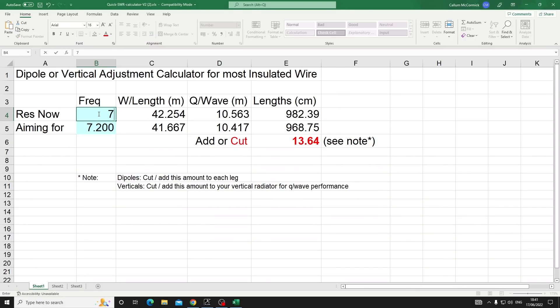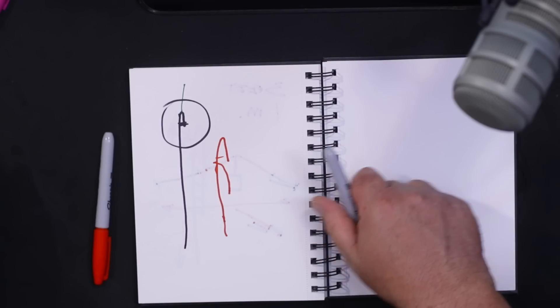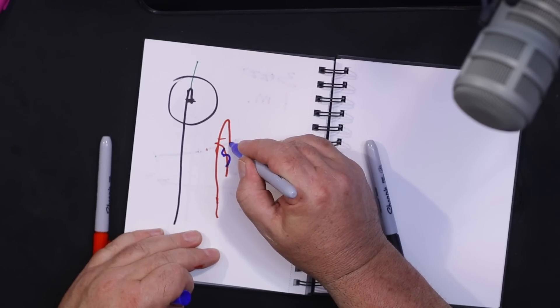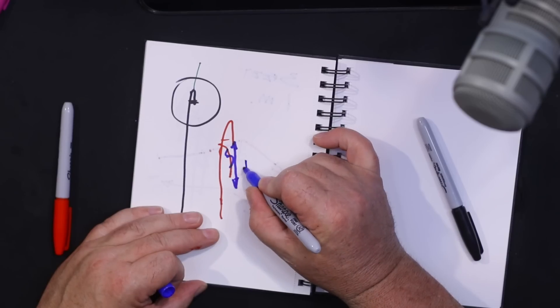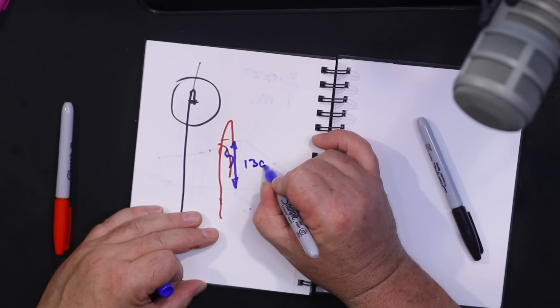But what happens if it was the other way around? What happens if it's currently on 7.35 and you actually want it on 7.25? It says we now need to add 13 centimeters. So how do we add 13 centimeters? If we just added 13 centimeters that way, or seven inches whatever it is...